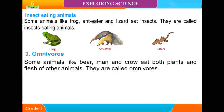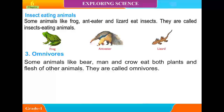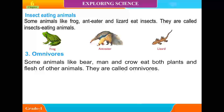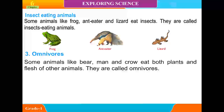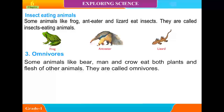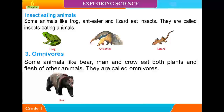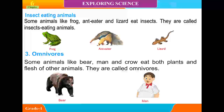Omnivores: Some animals like bear, man and crow eat both plants and the flesh of other animals. They are called omnivores. Examples include bear and man.